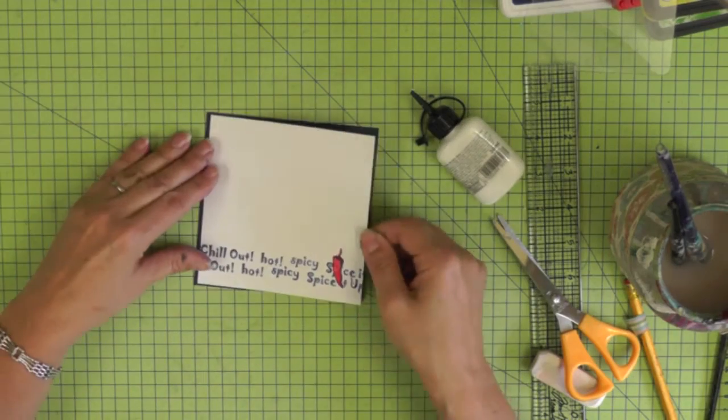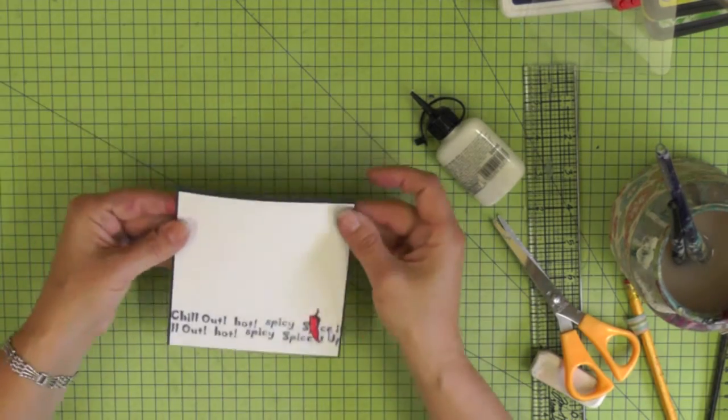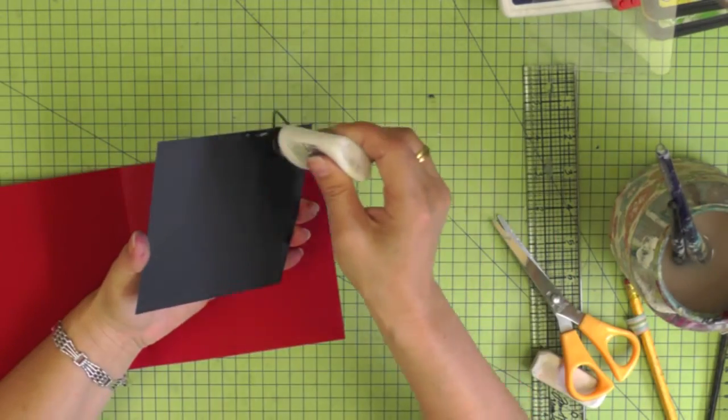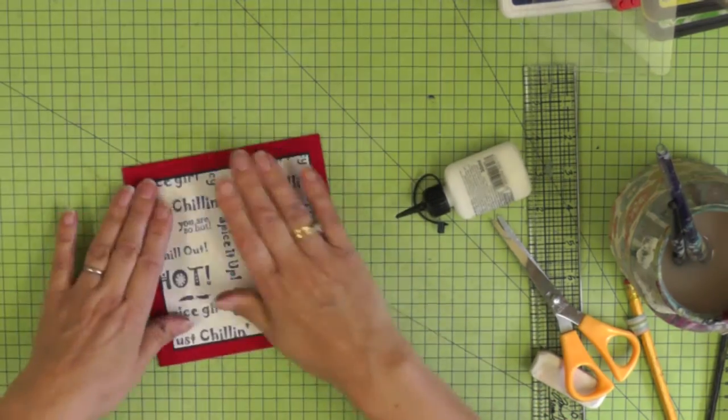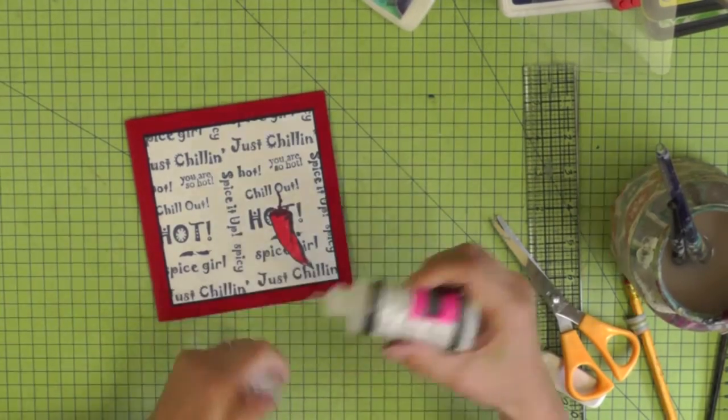Position the panel on top of the navy blue card first and then on the inside of your card. Everything's lined up in the center.